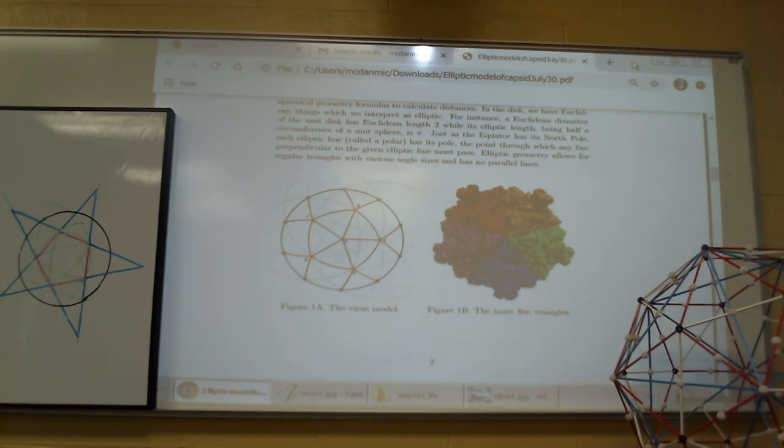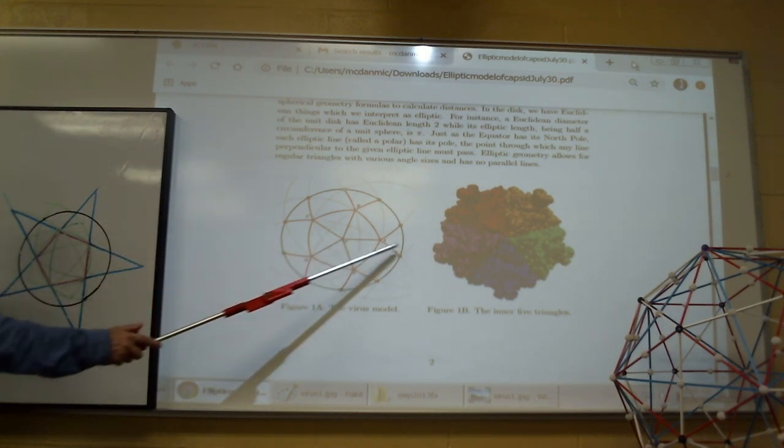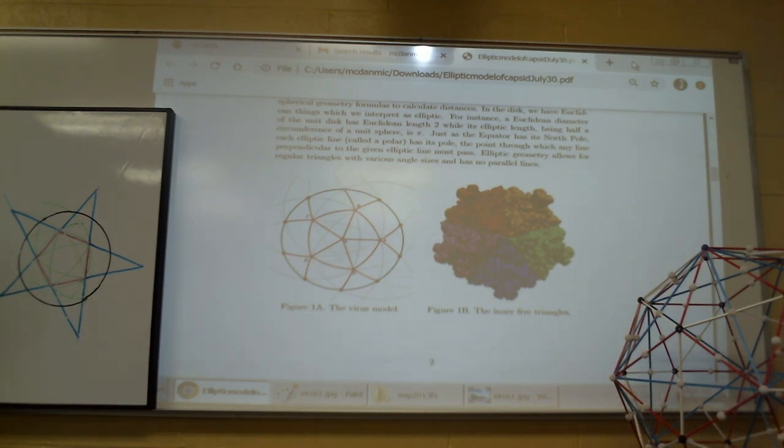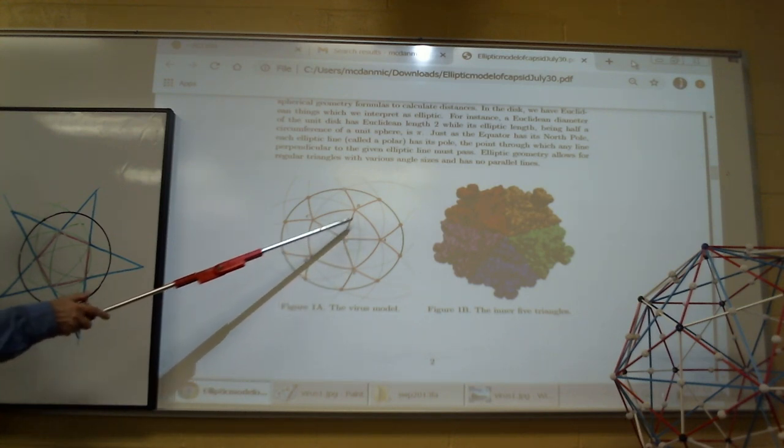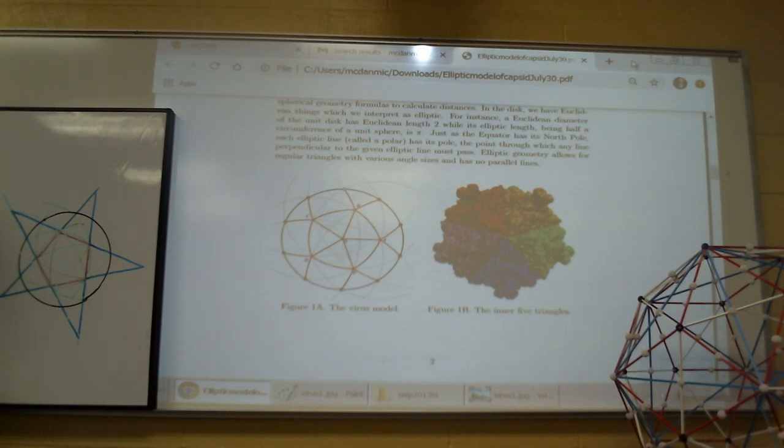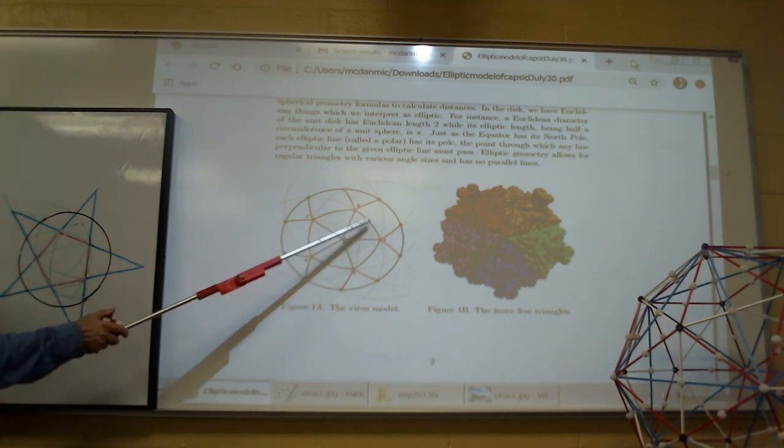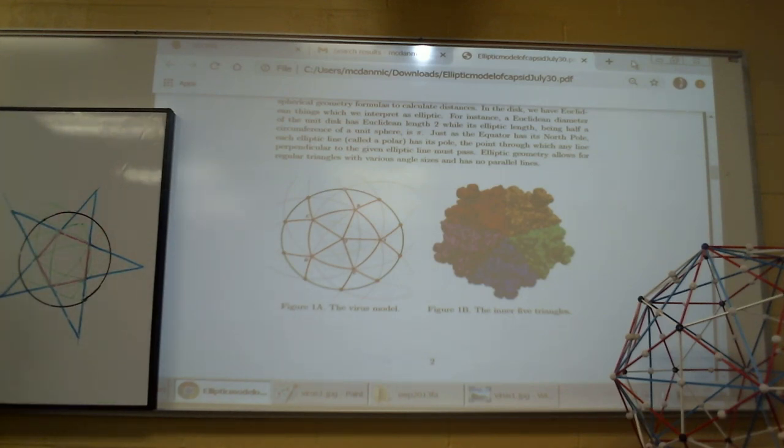In the disc, we have euclidean things which we can interpret as elliptic. For instance, a euclidean diameter of the unit disc has a euclidean length of 2, while its elliptic length, being half a circumference of a unit sphere, is pi. Elliptic geometry allows for regular triangles with various angle sizes and has no parallel lines. The euclidean straight segments with endpoints at O and its circular arcs through the antipodal points all lie on elliptic lines. Elliptic segments like AB are thicker to emphasize the parts of lines which form edges of the icosahedral faces of the capsid.